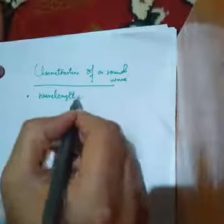I am going to write here the topic name: characteristics of a sound wave. The characteristics of sound waves we will discuss are: first is wavelength, second is frequency, third is amplitude, and fourth is time period. These are some of the characteristics that we generally talk about with waves.